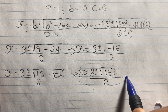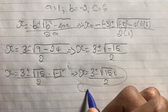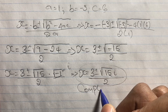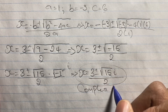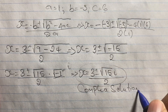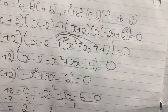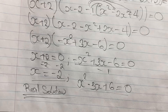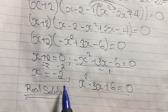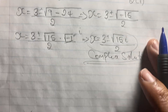However, this solution contains the imaginary number i, so it is referred to as a complex solution. Since there are no two real numbers that multiply to give a negative number, this solution is complex. Our real solution remains x equals negative 2.